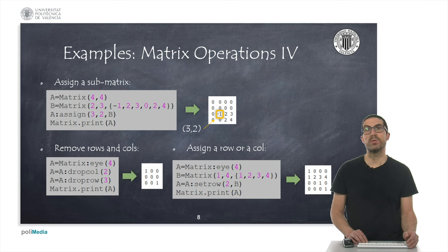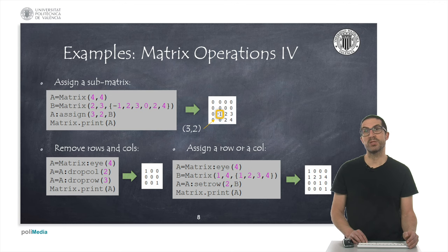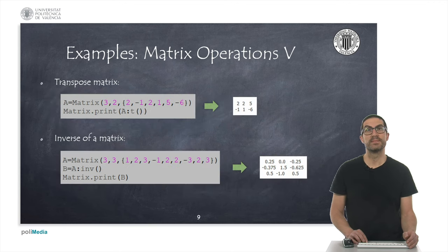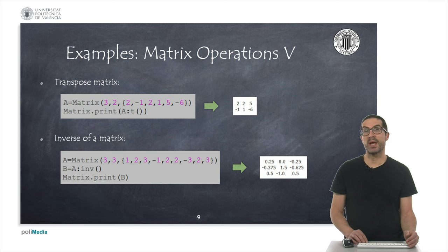We can delete rows and columns of matrices using the methods dropCol or dropRow, or assign rows or columns using the methods setRow or setCol. The transpose of a matrix is obtained using the T method, while we can calculate the inverse of a square matrix using the Gauss-Jordan method with the inv function.